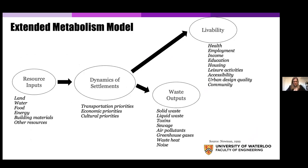Taking those material flows and looking at resource inputs and waste outputs, building on that first urban metabolism study — this one is a little more extended in that it also tries to track some livability indices. These are not as easily quantified as energy or water; it tries to track things like health, employment, income, education, accessibility, and community. The more we can add to this model the better it could be, though that also means introducing some uncertainties as well.